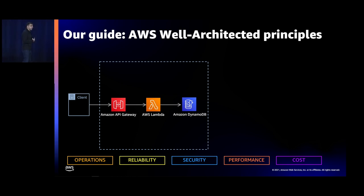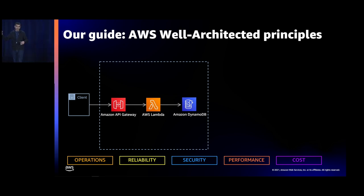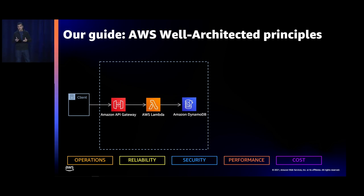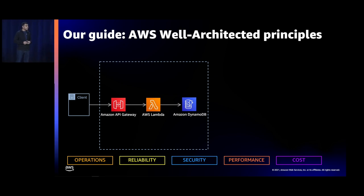The third foundational piece is best practices from AWS Well-Architected principles. There are five pillars, and I'll explain them using a simple application: clients accessing via API Gateway, Lambda functions for compute, and DynamoDB as the purpose-built database. We'll walk through how to make this application production-ready by following those best practices.